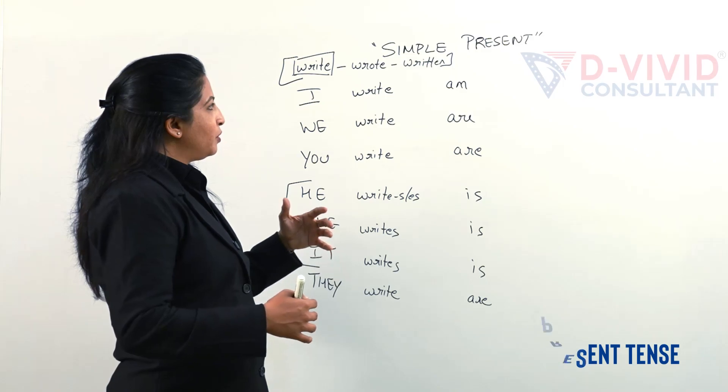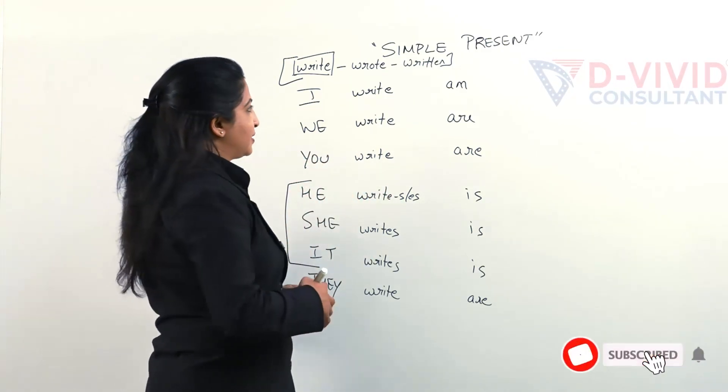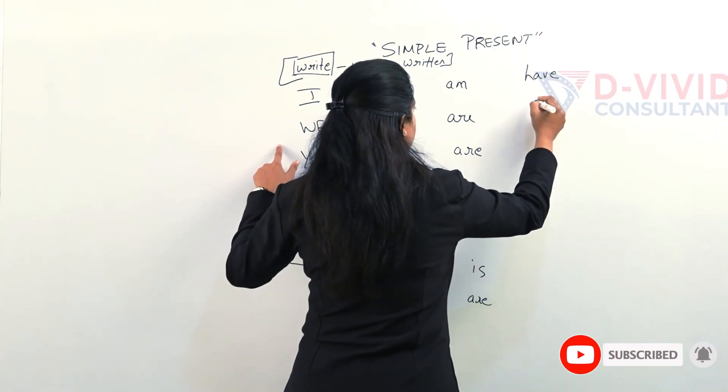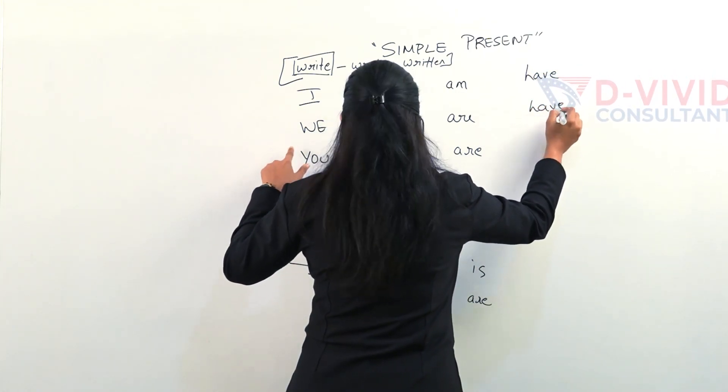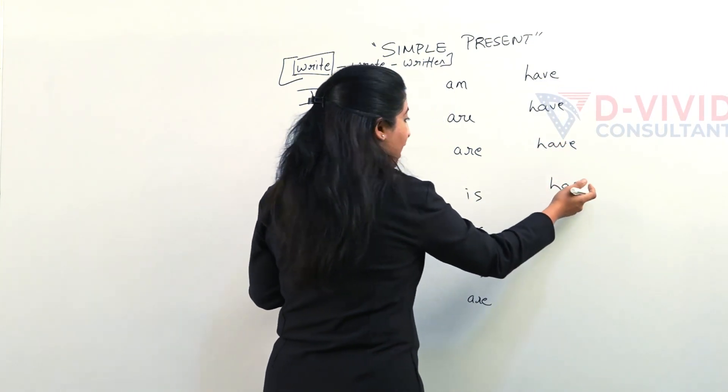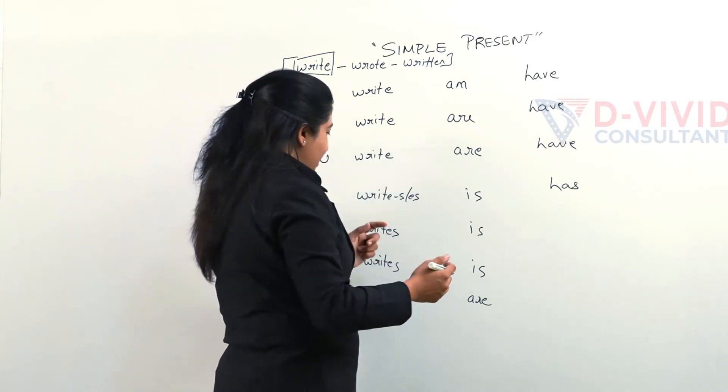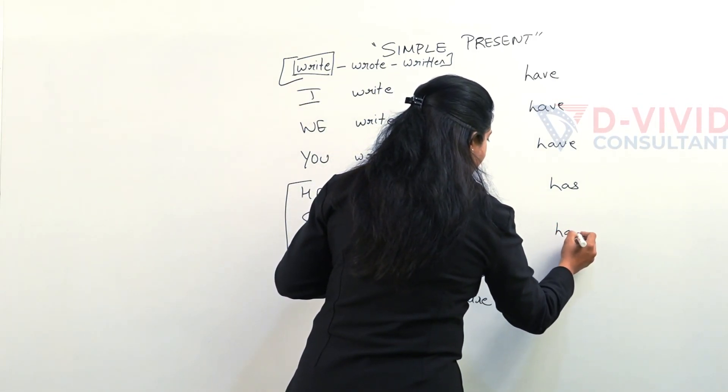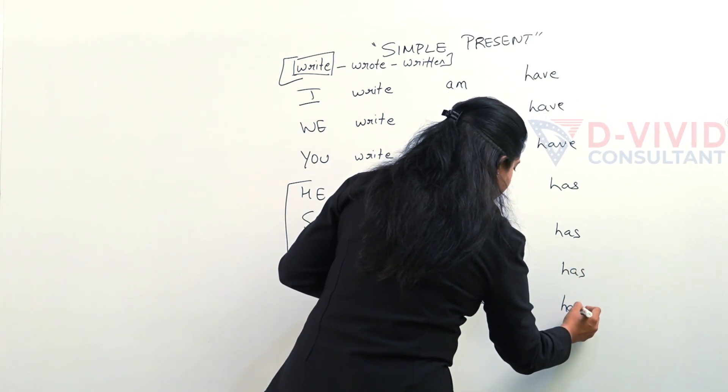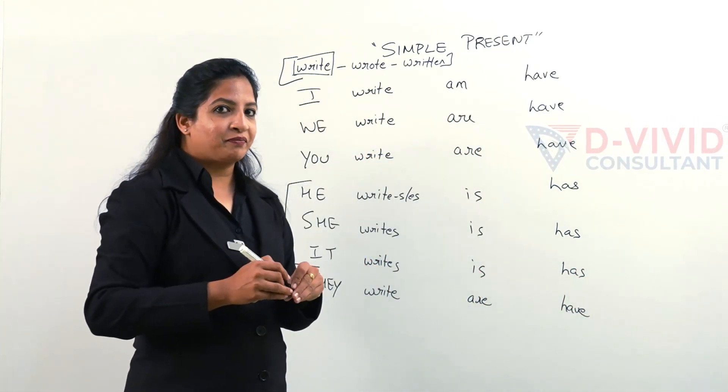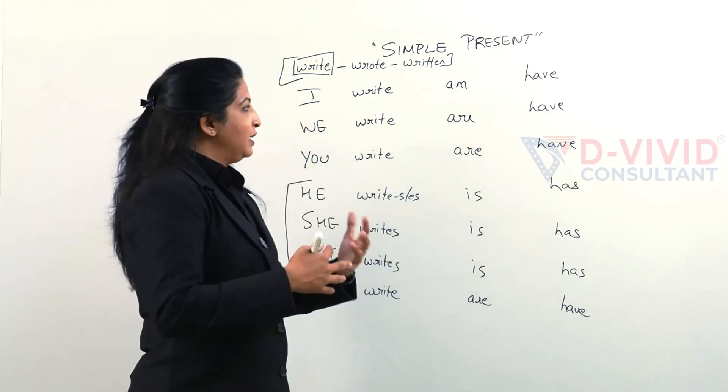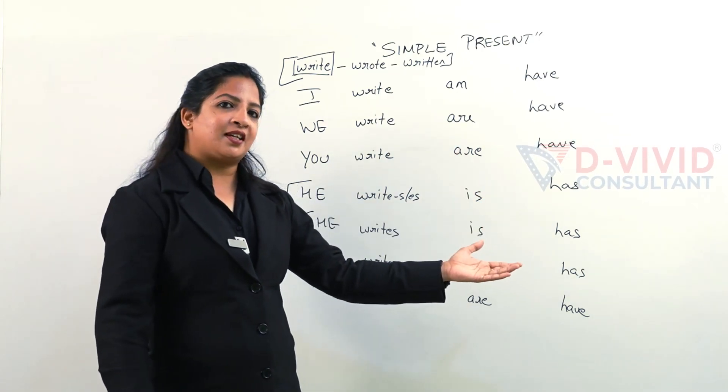Let me give you the form of have or has. We have, you have, he has. We have to use the s or es. She has, it has, and they have. There you go. But be very careful. We don't need two verbs in simple present tense.